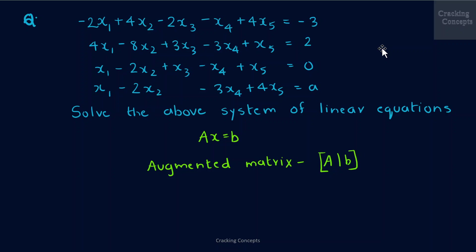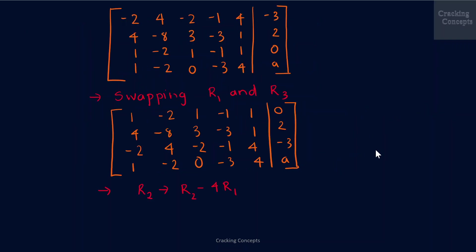Now we will see how to solve the following system of linear equations using elementary transformations in row echelon form. We start by converting the system into a compact matrix notation Ax = b. We build an augmented matrix of the form A|b, using a vertical line to separate the left-hand side from the right-hand side. So we obtain the matrix A|b from the given set of equations. I will now apply elementary transformations, starting by swapping rows R1 and R3.